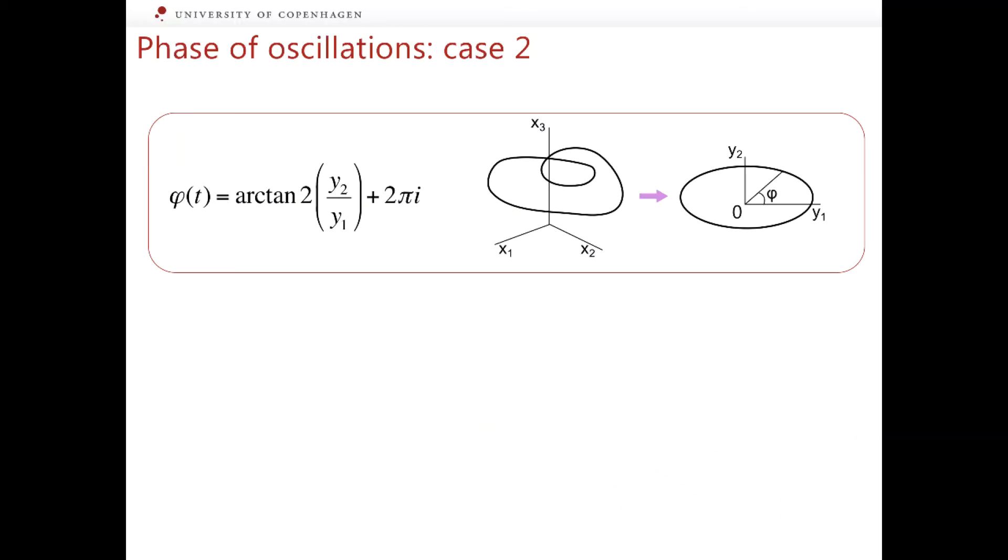Just like for the first phase, to ensure that the phase grows monotonously, to find the phase during the cycle number i+1, we take the value of the phase at the end of the cycle number i equal to 2π i and add its increment since the beginning of the current cycle.